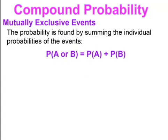When we're working with mutually exclusive events, the probability is found by summing the individual probabilities of the events. So if we have a probability of A or B, what you would do to find the probability is find the probability of A and then find the probability of B and add them together.